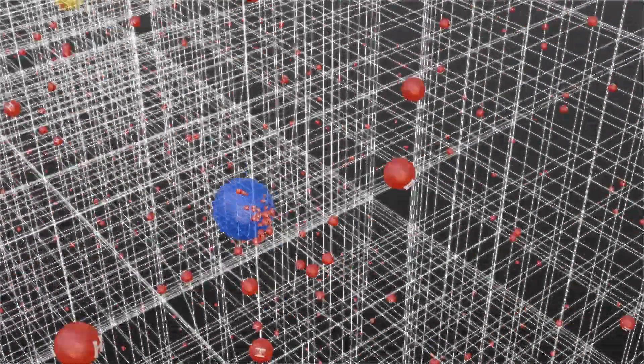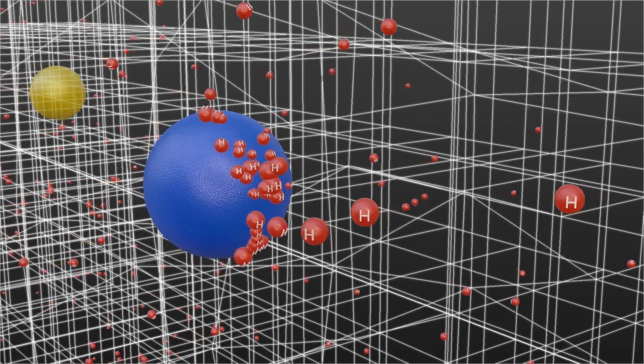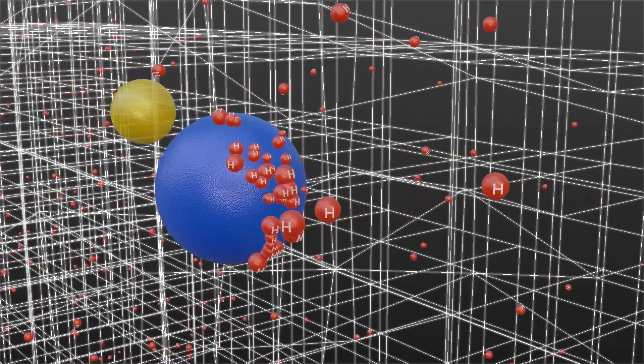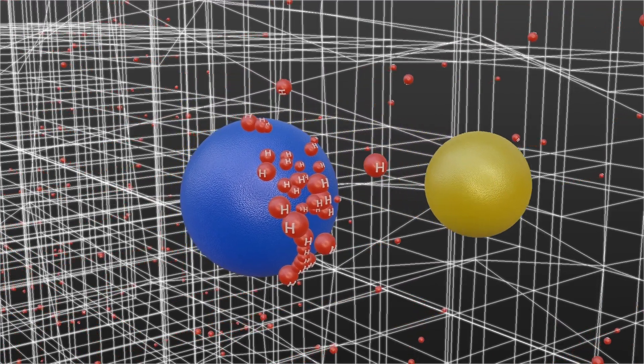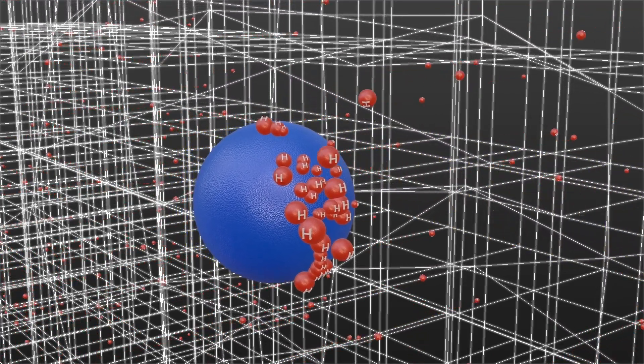Different particles interact with it in different ways. With virtually no mass, electrons pass through the Higgs field virtually unimpeded. On the other hand, top quarks, which have heavier masses, interact more strongly with the field, according to Symmetry magazine.